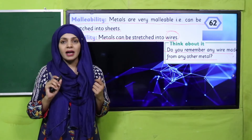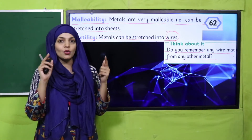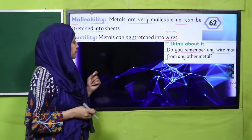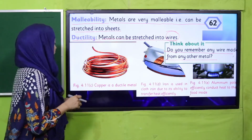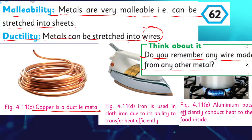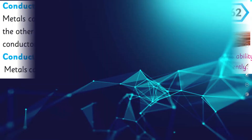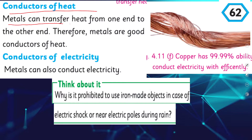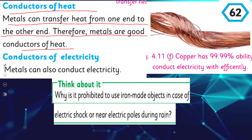Iron wires are used at home for hanging clothes to dry — those are made of iron. Steel wires are also common. Copper is a ductile metal. Iron is used in pots due to its ability to transfer heat efficiently, and aluminium pots efficiently conduct heat to the food inside. Metals can transfer heat from one end to the other, so metals are good conductors of heat.